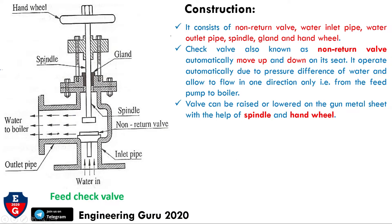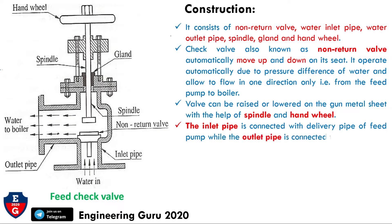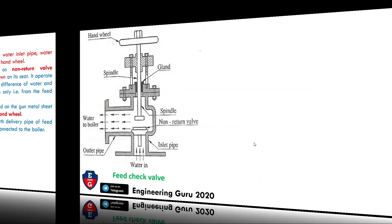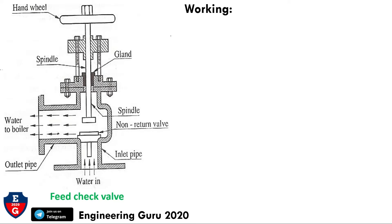The inlet pipe is connected with the delivery pipe of the feed pump, while the outlet pipe is connected to the boiler. Here we observe the inlet pipe connected to the delivery pipe and the outlet pipe connected to the boiler. This completes the construction of the feed check valve.